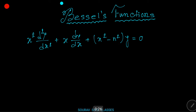Particular solutions of this equation are called Bessel's functions of order n. We find the Bessel equation while solving the Laplace equation in polar coordinates by the method of separation of variables. The equation has a number of applications in engineering.